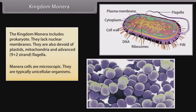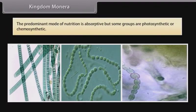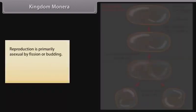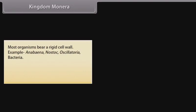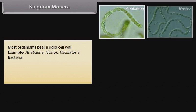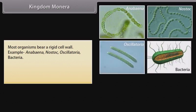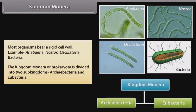Monera are typically unicellular organisms. The predominant mode of nutrition is absorptive, but some groups are photosynthetic or chemosynthetic. Reproduction is primarily asexual by fission or budding. Protosexual phenomena also occur. The kingdom Monera or Prokaryota is divided into two sub-kingdoms.